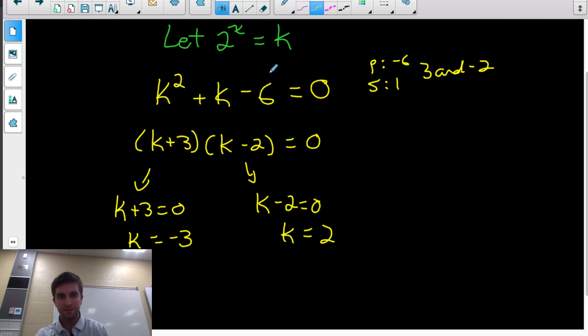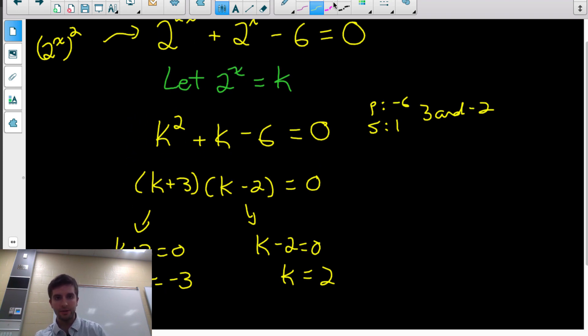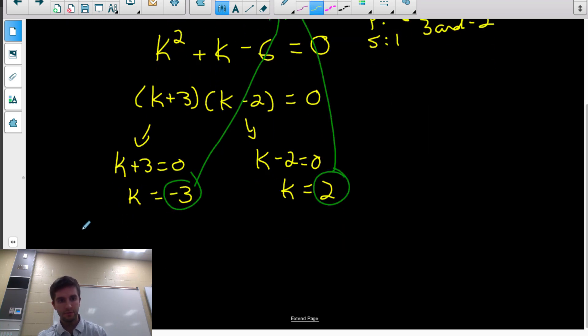So those are answers for k. Those are the answers to this equation. But that's not the equation we actually have. Our actual equation doesn't have these k's. It has 2 to the x's. So what we're going to do now is we're going to take these answers we just got, negative 3 and 2, and plug those back into our let statement for k. And we will get 2 cases.